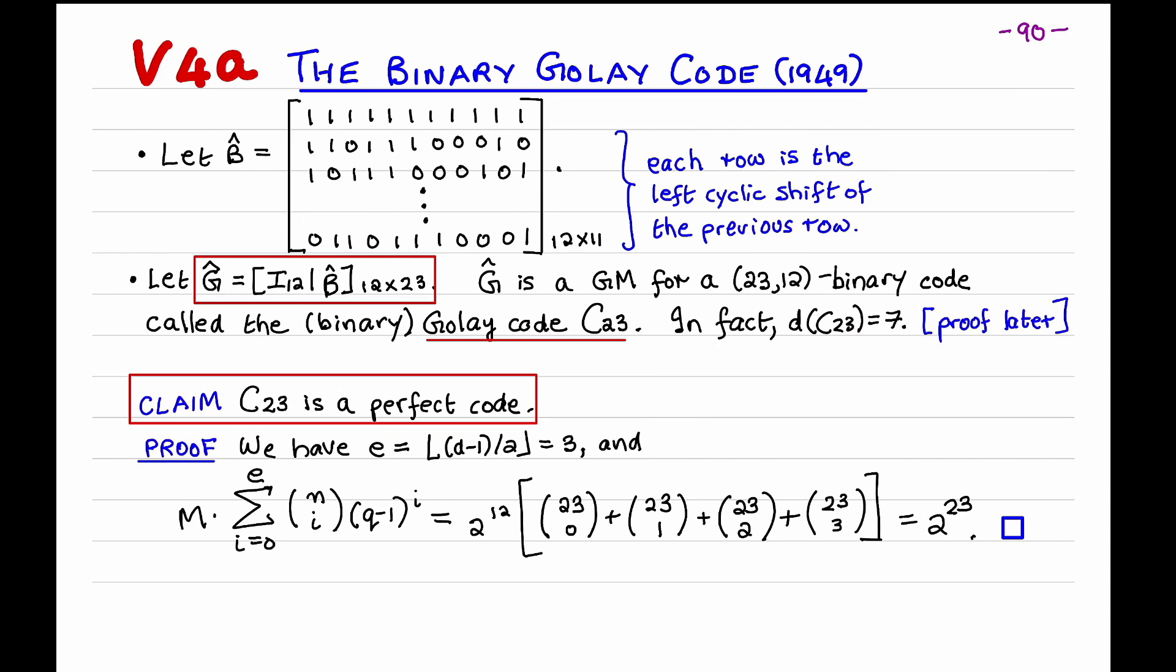Let me first verify that C23 is a perfect code. And that's just done by verifying that the sphere packing bound is met with equality. Now the error correcting capability of C23 is three. And so we can check that the left-hand side of the sphere packing bound, which is given by this expression, equals the right-hand side. M, the number of codewords, is 2 to the 12. And q is 2, so q minus 1 is 1. So the summation is the sum of these four binomial coefficients. And you can check that this expression is 2 to the 23, which is the right-hand side of the sphere packing bound. This establishes that C23 is a perfect code.